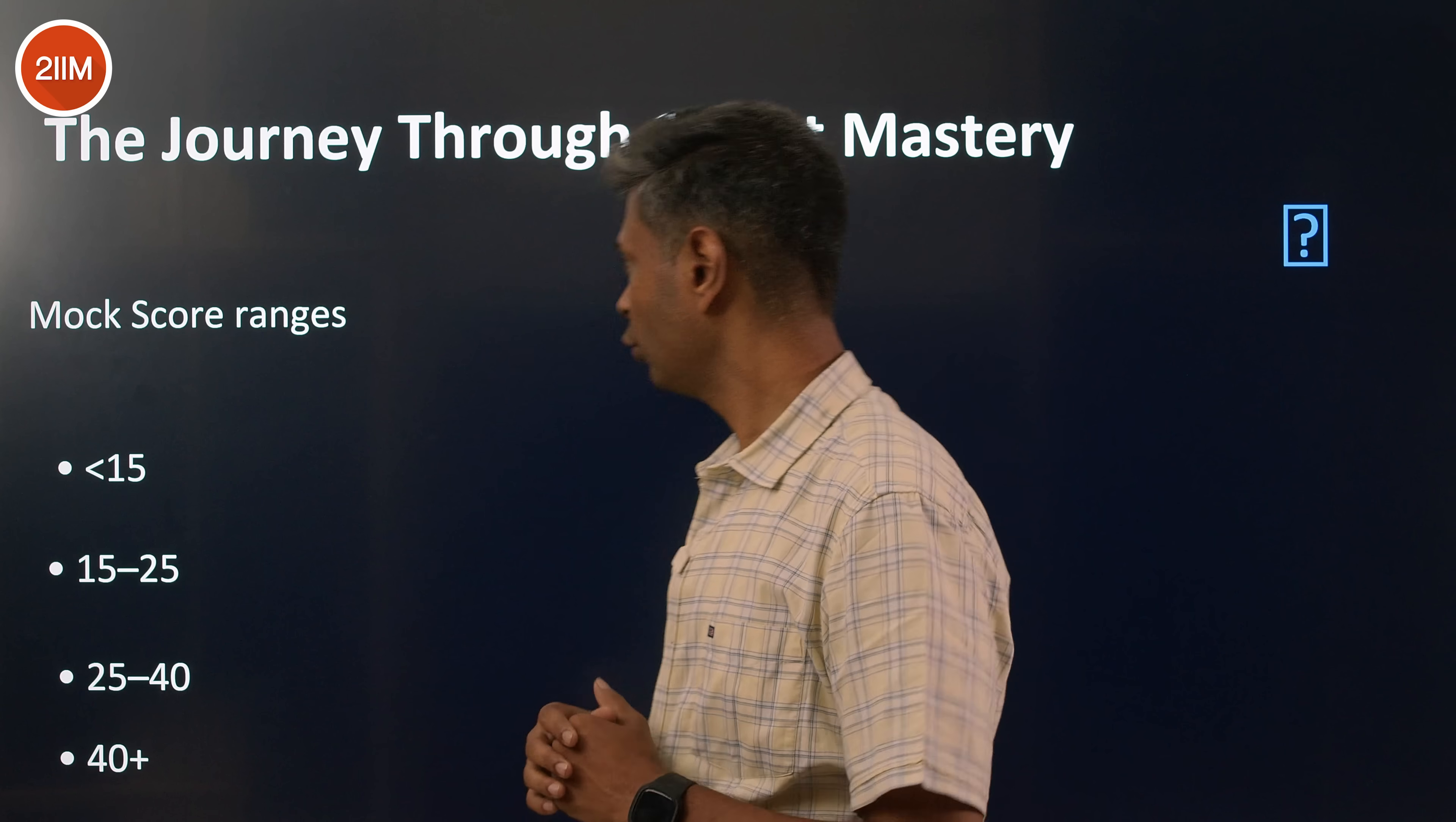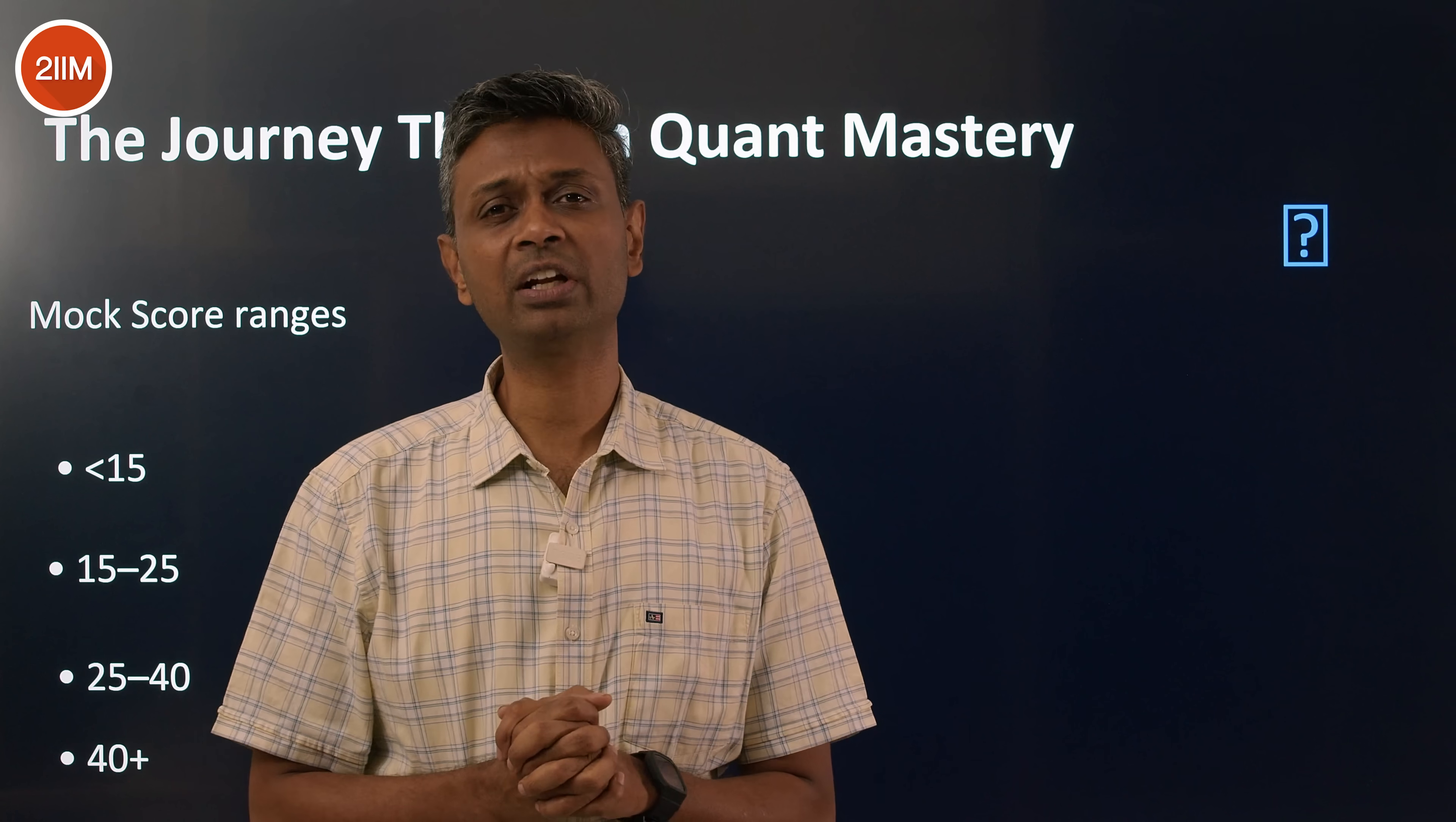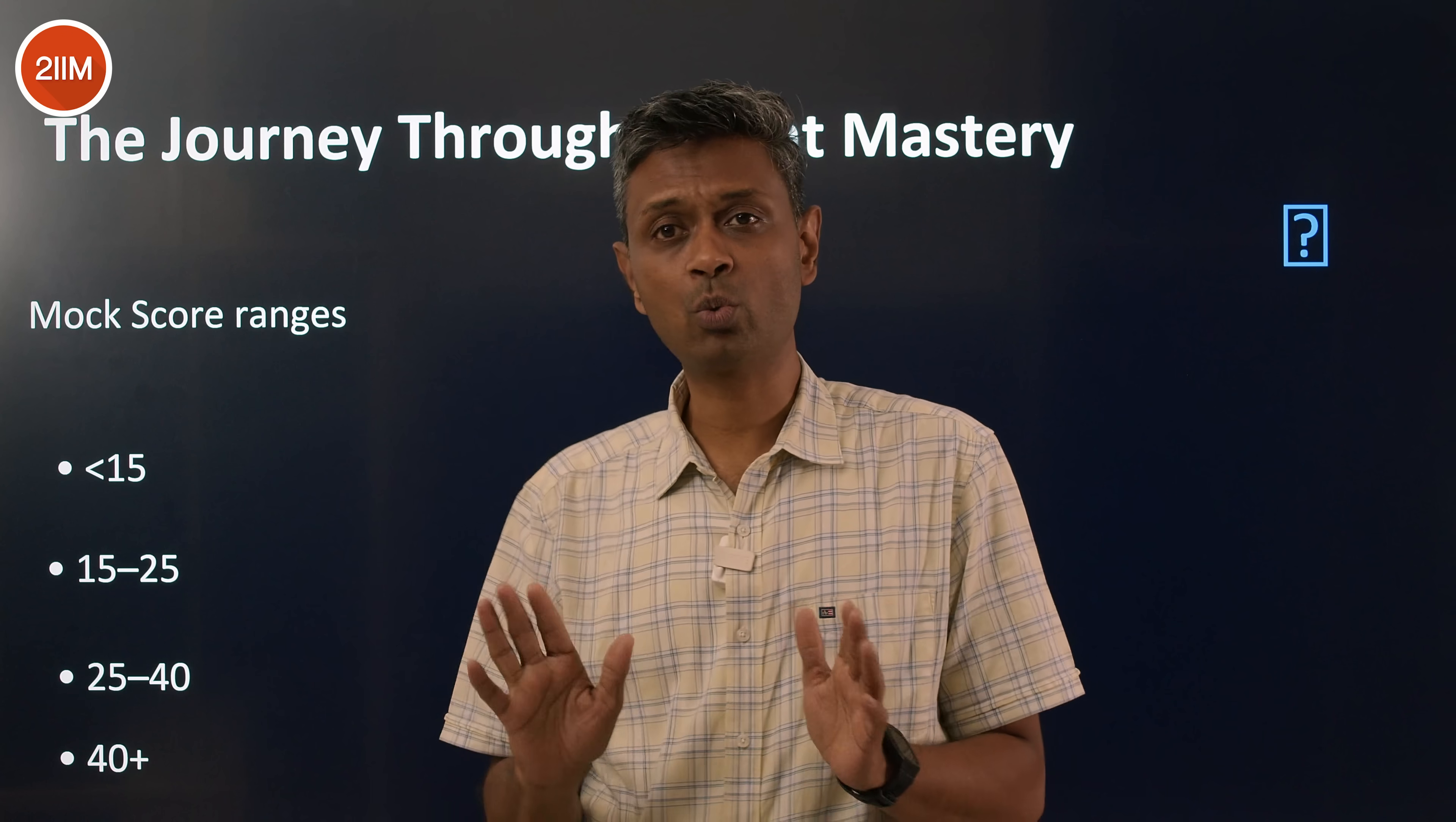So let us dig down and say, if you are in less than 15 range in quant, we are getting fewer than 15 marks, what should you do? Consistently getting, my typical score is less than 15, 10 or 11 or 8 or 12, something like that. What should one do?